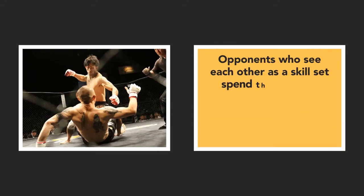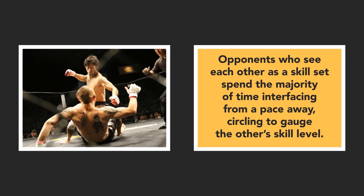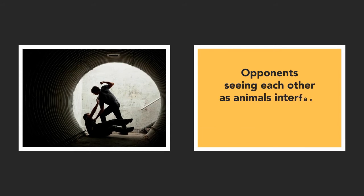Opponents who see each other as a skill set spend the majority of time interfacing from a pace away, circling to gauge the other's skill level. Opponents seeing each other as animals interface with skin-to-skin brutality.